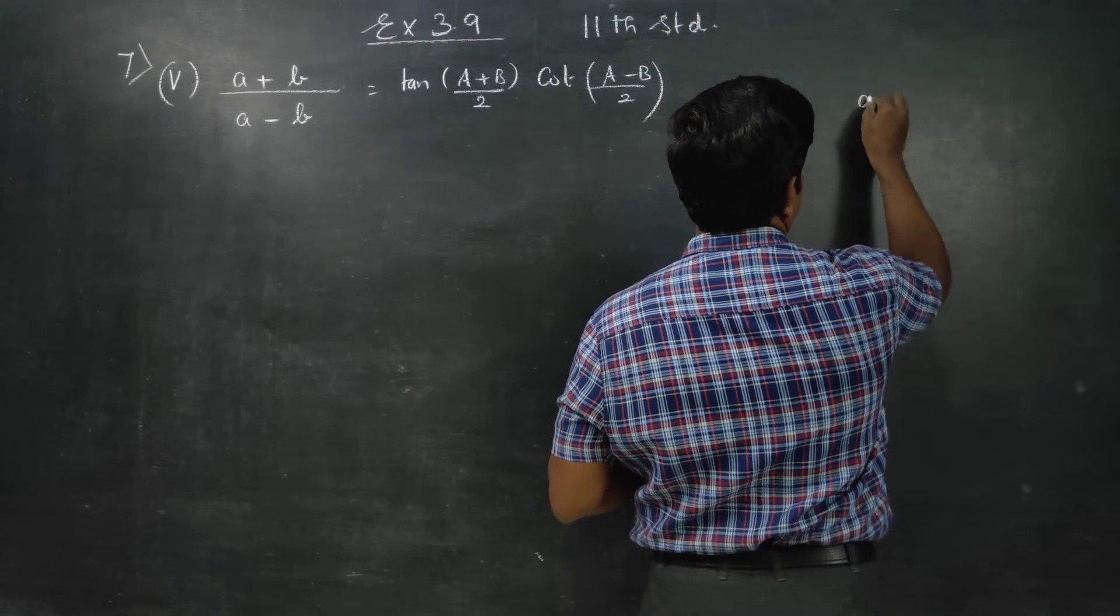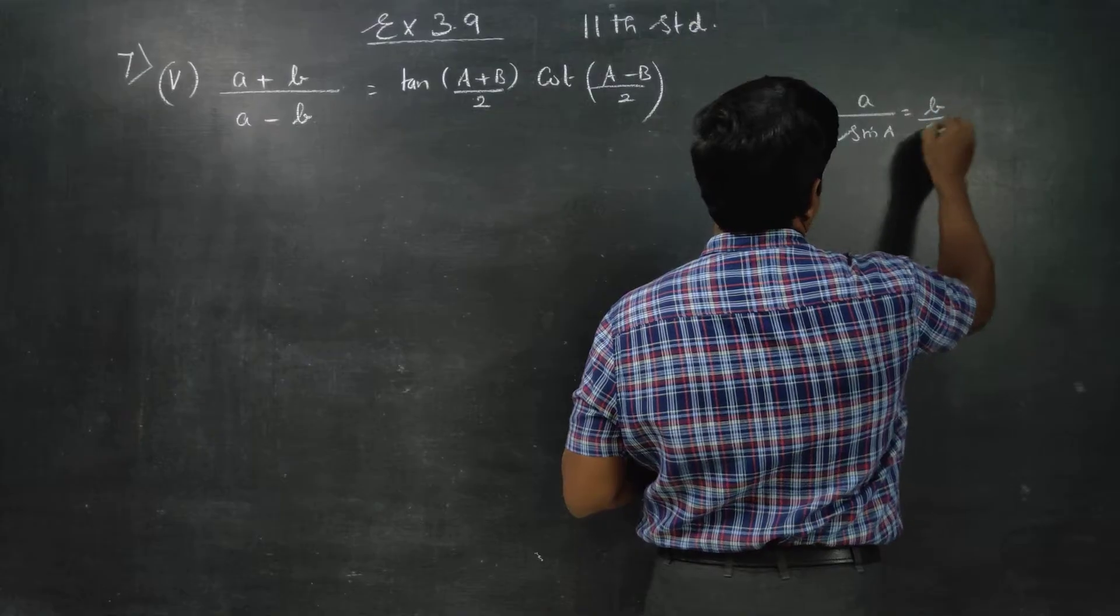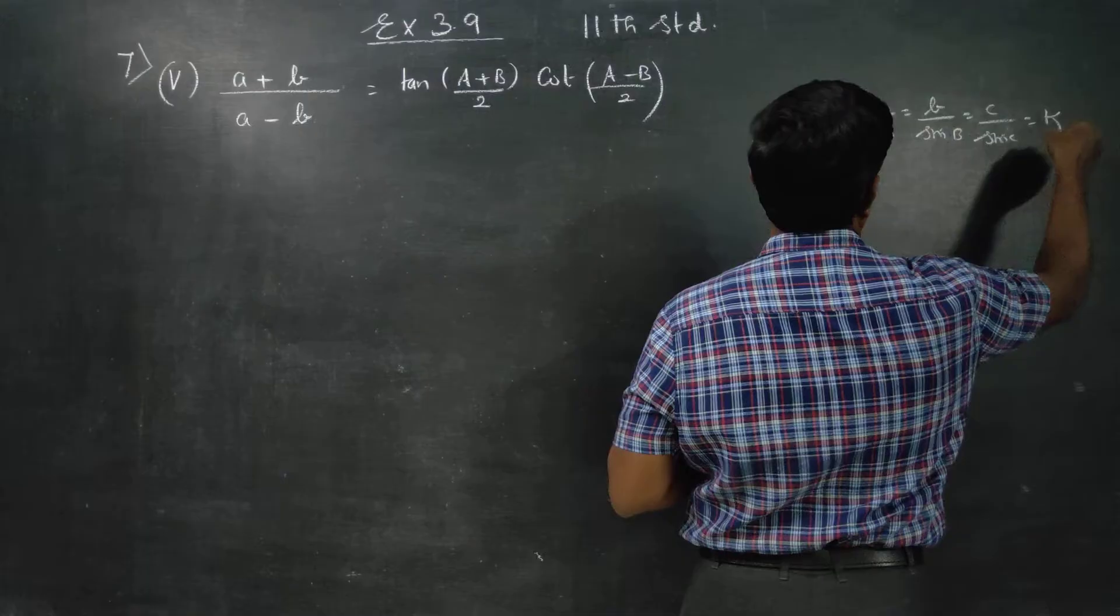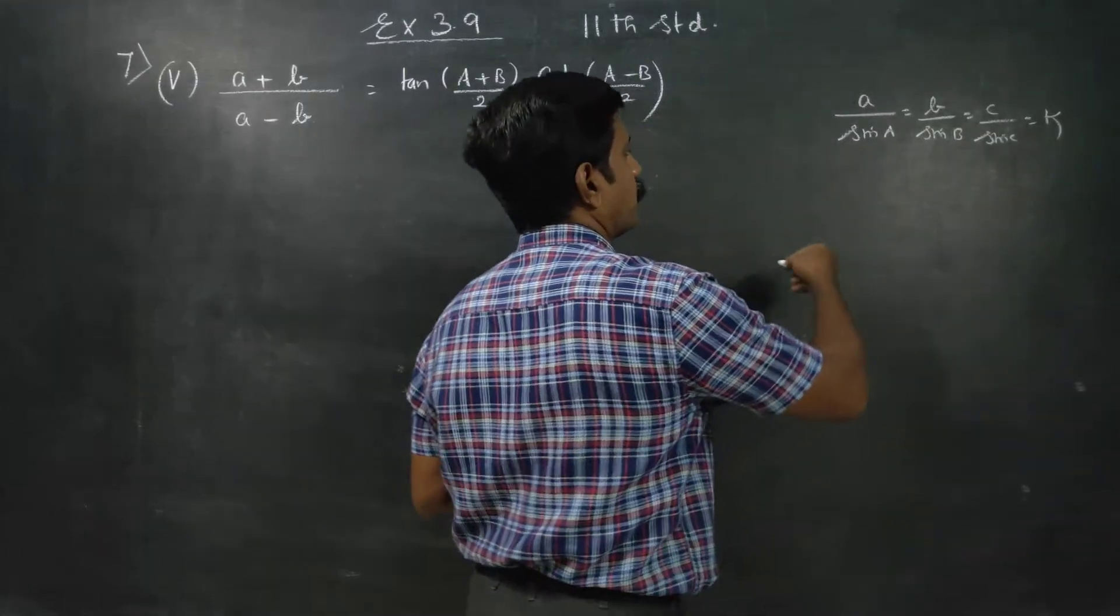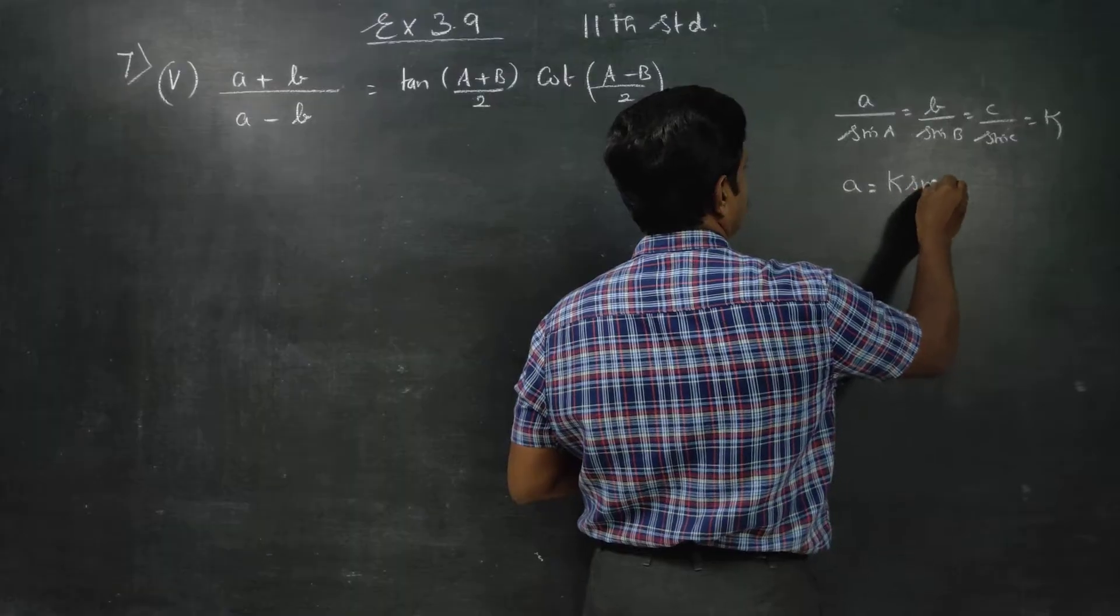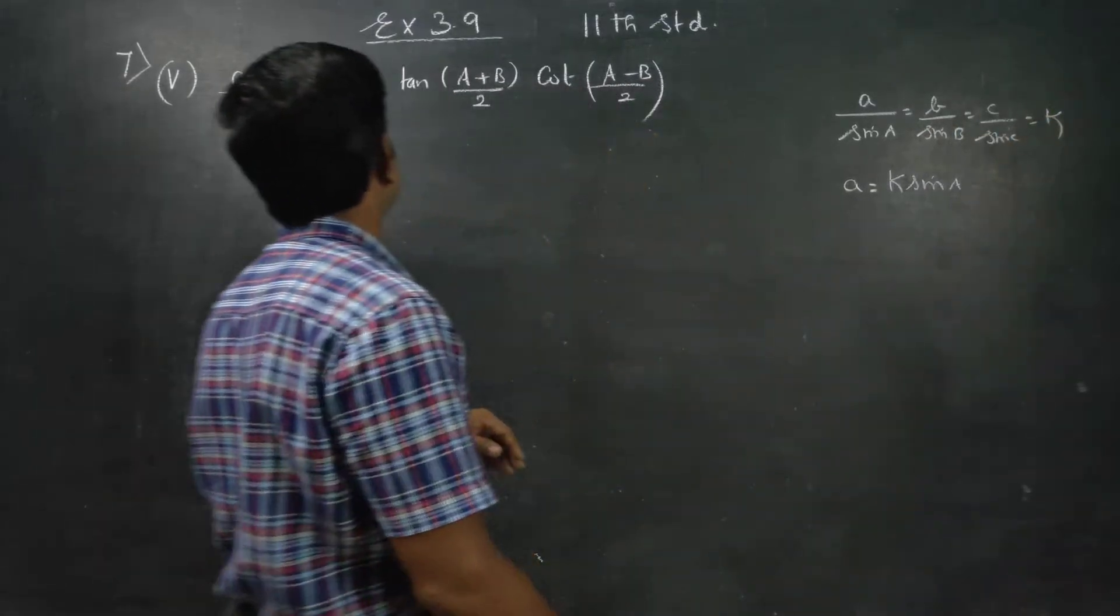We know that a/sin A = b/sin B = c/sin C = 2R or k. It is called the sine formula. We know that a = k sin A, b = k sin B, c = k sin C. That is what I will use.